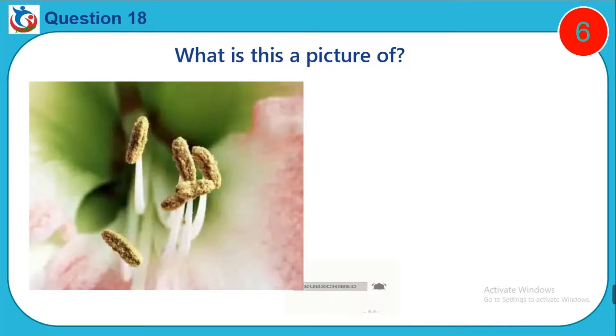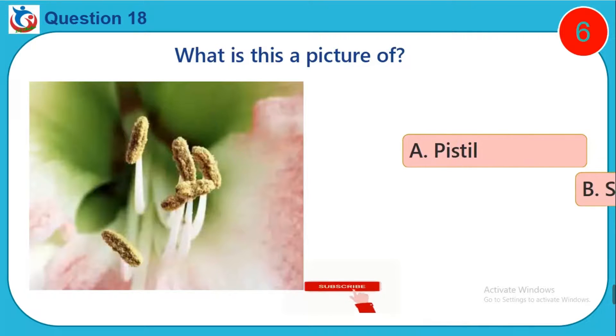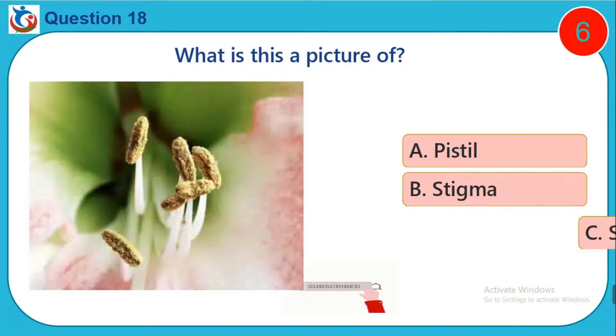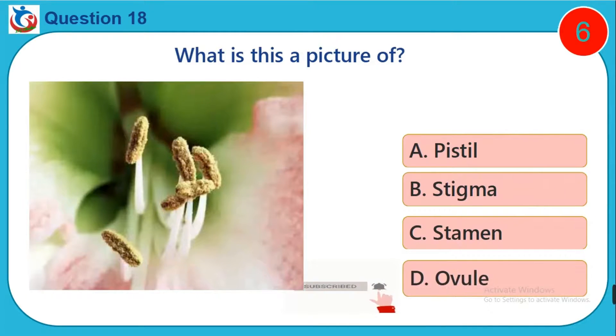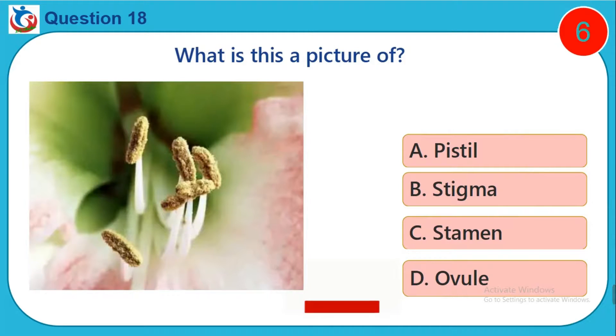Question 18. What is this a picture of? A. Pistil. B. Stigma. C. Stigma. D. Ovule.